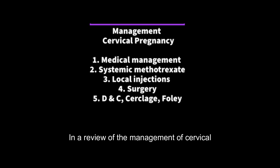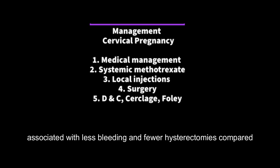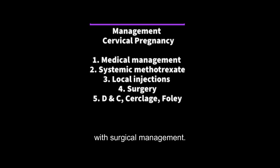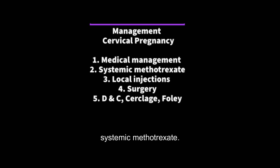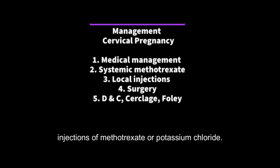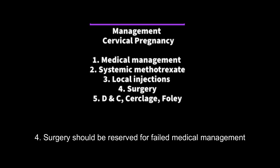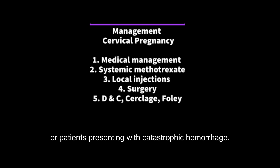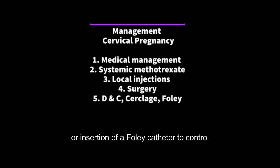In a review of the management of cervical pregnancies, the following is suggested: 1. Primary medical management of early cervical pregnancy is associated with less bleeding and fewer hysterectomies compared with surgical management. 2. Non-viable cervical pregnancies can be treated with systemic methotrexate. 3. Viable cervical pregnancies can be treated with local injections of methotrexate or potassium chloride. 4. Surgery should be reserved for failed medical management or patients presenting with catastrophic hemorrhage. 5. Surgical options include dilatation and curettage with cerclage or insertion of a Foley catheter to control bleeding.